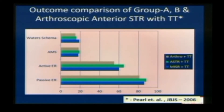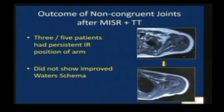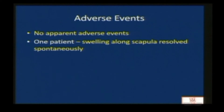When comparing our outcome measures with group B and the published series of Pearl et al. in JBJS 2006, with matching patient populations, we found no statistically significant difference in outcomes across all three series. On MRI, patients treated with arthroscopy or open release showed some better glenohumeral centralization, but those patients also required secondary internal rotation osteotomy in some cases. In our non-congruent glenohumeral joint group, three of five patients had persistent rotation position of the arm and did not show improved Waters schema. There were no apparent adverse events, with one patient developing swelling along the medial scapular border which resolved spontaneously.